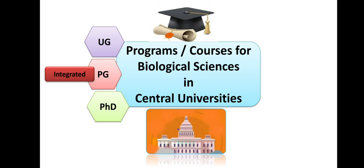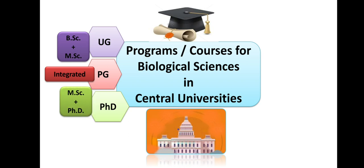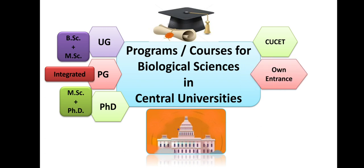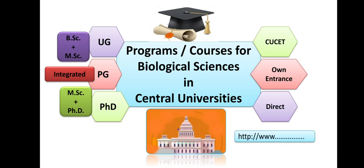First, let's understand integrated courses — when two courses are merged together. Like, integrated MSc is BSc plus MSc, a 3+2 course. Integrated PhD is MSc plus PhD. The mode of admission: first, admission through CUCET — that is Central University Common Entrance Test, conducted through 14 universities by the Central University of Rajasthan. If not through CUCET, universities may have their own entrance examination, or admission may occur through direct process, that is merit basis. For every course and every university, I am going to provide the website in the description box. Watch this video till the end for very good information.